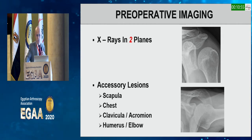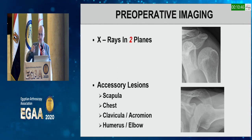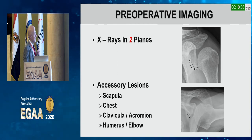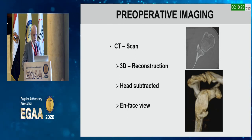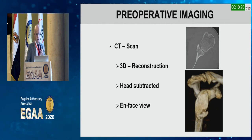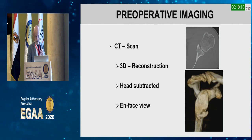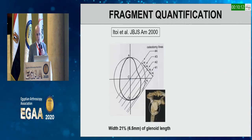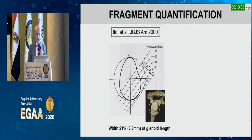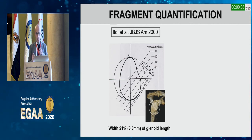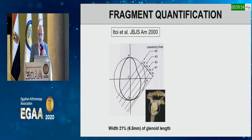Pre-operative imaging requires X-rays in two planes, and always check the scapula, chest, clavicle, and acromion because you may have a floating shoulder. Follow the white cortical bone line on X-ray. CT scan with 3D reconstruction and subtraction of the humeral head gives the best understanding. The en-face view — a digital plane — allows you to easily see the fracture. Aghai's 2000 study established that 21 percent bone loss corresponds to approximately 6.5 millimeters of glenoid length.